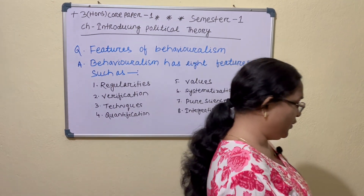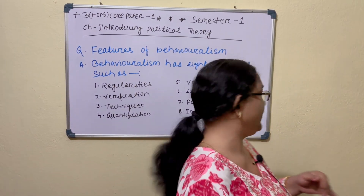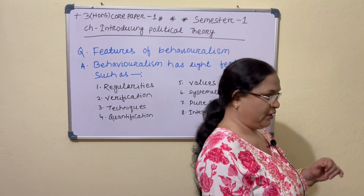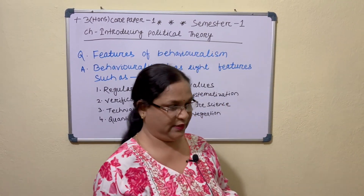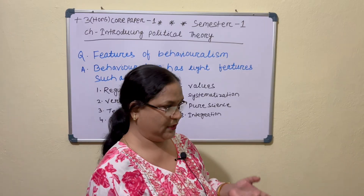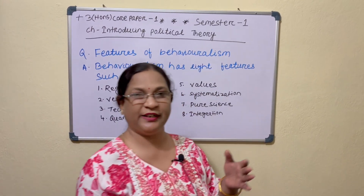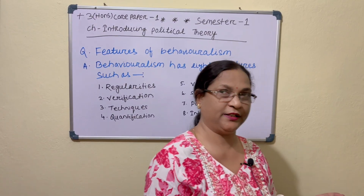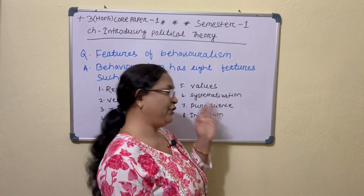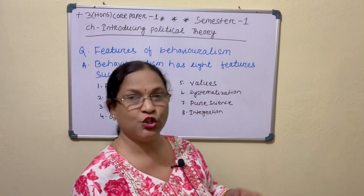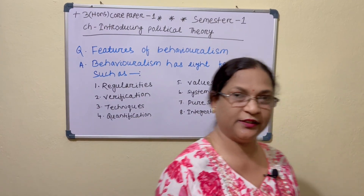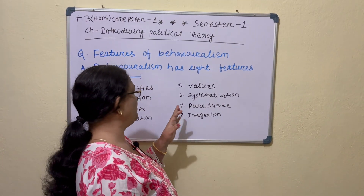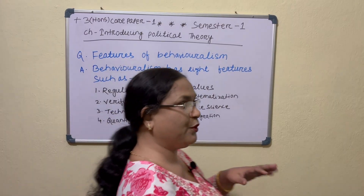Your sixth point is Systematization. According to the behavioralist, research in Political Science must be systematic. Theory and research should go together. Your seventh point is Pure Science.